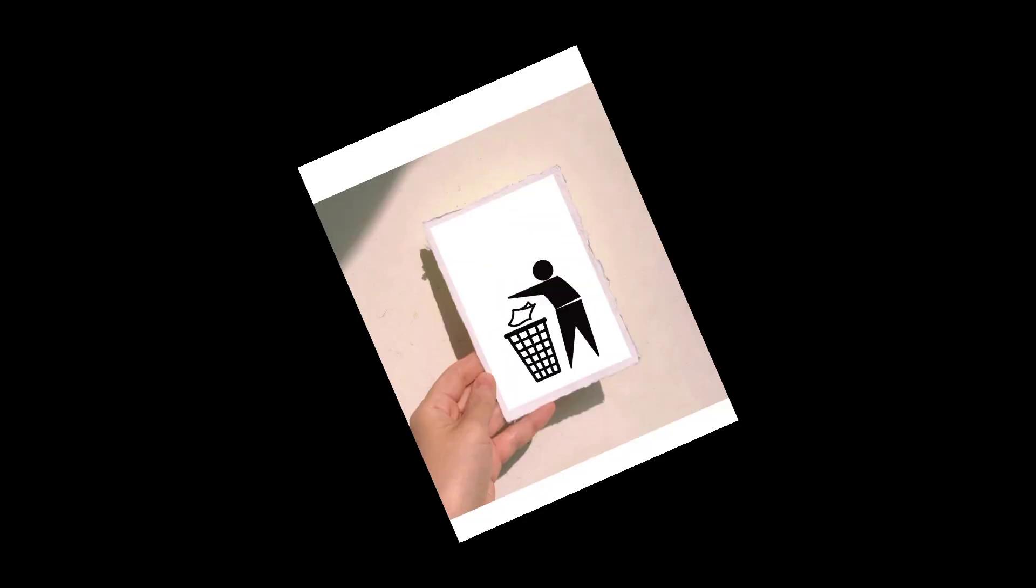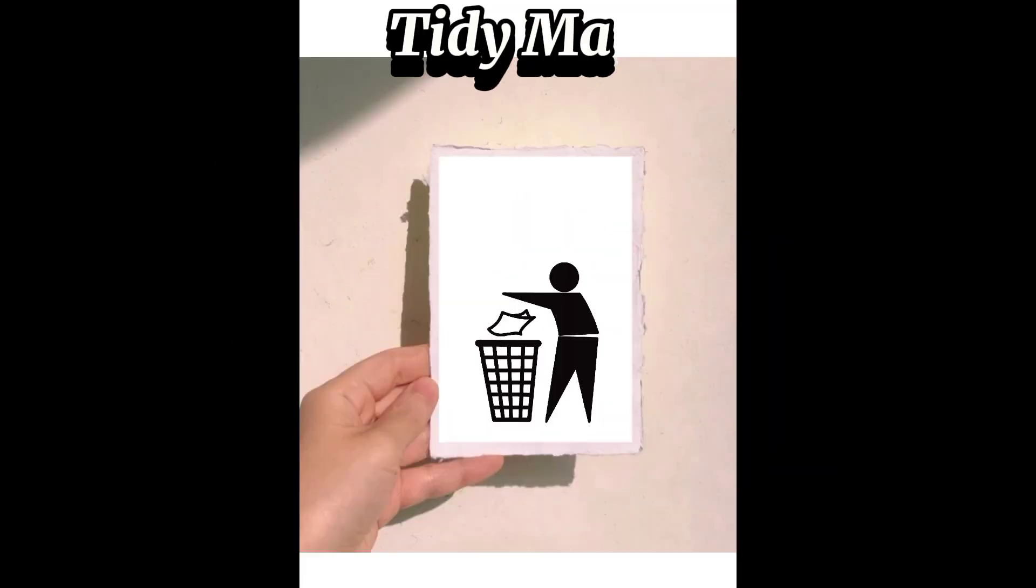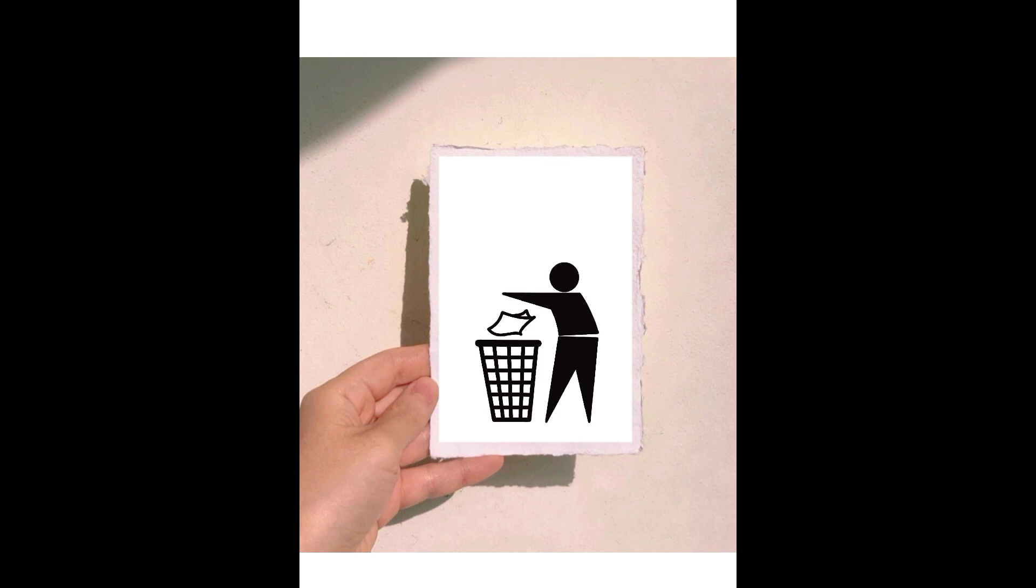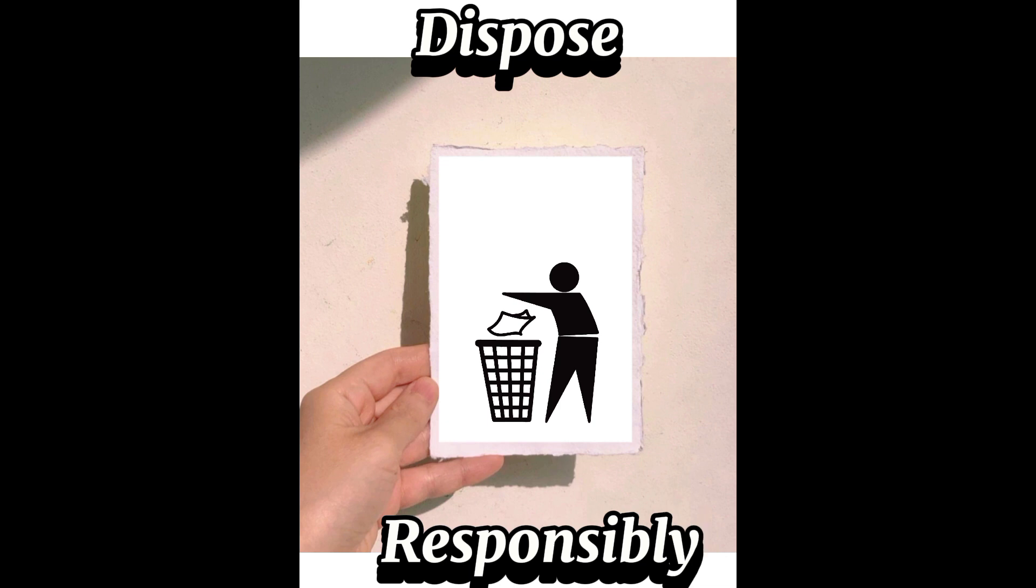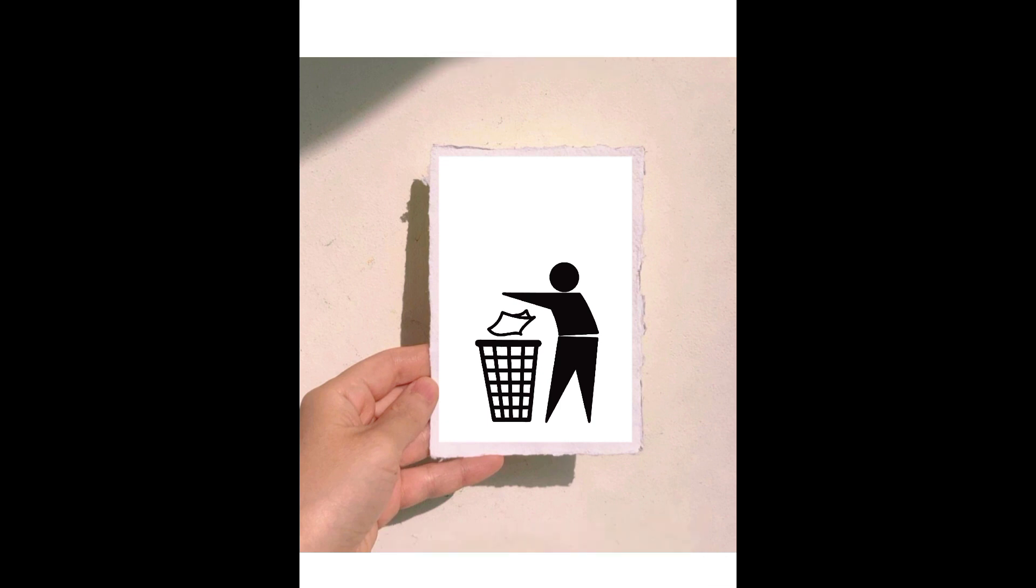At number 9, the tidy man symbol. This symbol with a figure throwing litter in a trash can usually signifies that the packaging should be disposed of properly. The tidy man symbol was first introduced in the 1970s by the American Keep America Beautiful campaign.